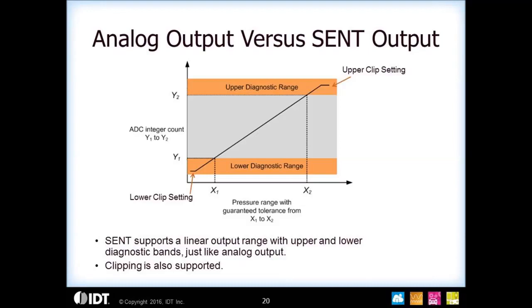SENT has the same features you're used to seeing in an analog output in an automotive application: you can set a lower and upper diagnostics range, set clipping limits at the low and high end, and set the linear range. You can record in the part your X1 and X2 values for the linear range — for example, a pressure range from 0 to 100 psi — and your Y1 and Y2 for the linear range to define the count or percent of full scale. These can actually be stored in the part and read out in the slow channel as a slow channel message.